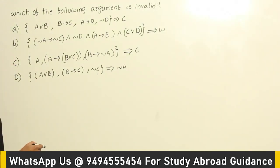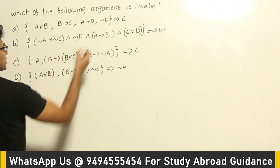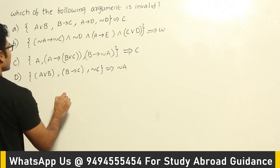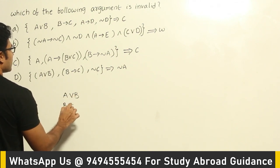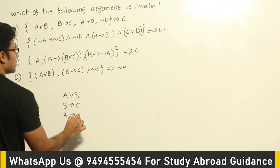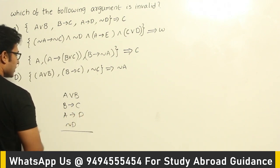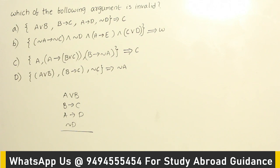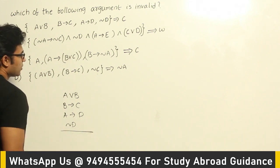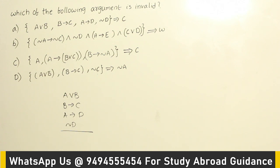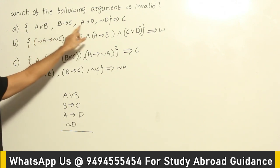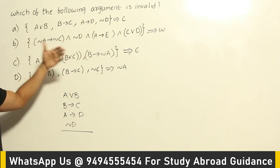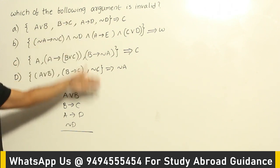Let's see this question: which of the following arguments is invalid? The argument is given and we are supposed to find out whether it is valid or invalid. The premises given are: A or B, and negation B. Now let's see what rules of inference we could use. One simple way of solving this is to construct the truth table — apply AND to all the premises and find out the truth values.